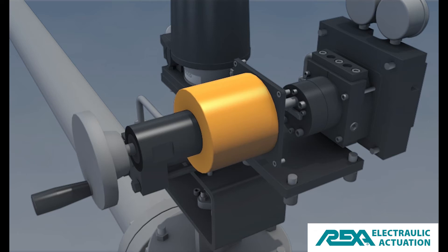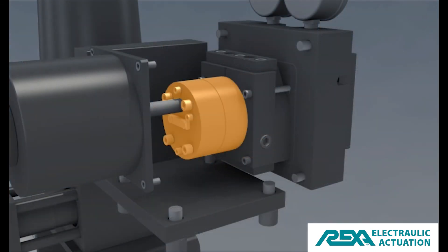The motor only activates when a valve position change is required, making it highly efficient. The hydraulic pump only generates the pressure required to overcome the load that the actuator is driving, making it even more efficient.